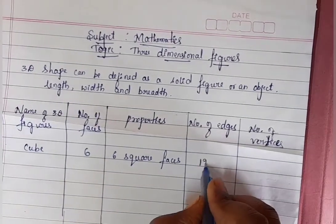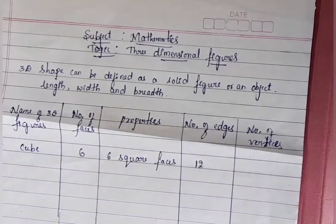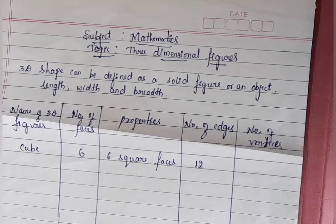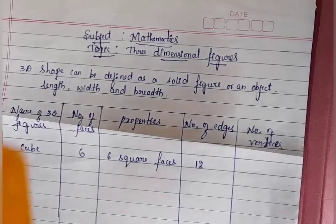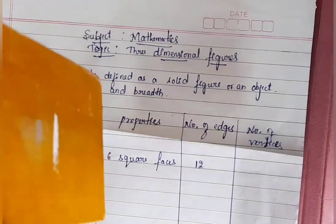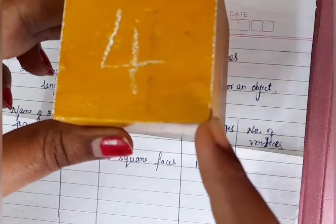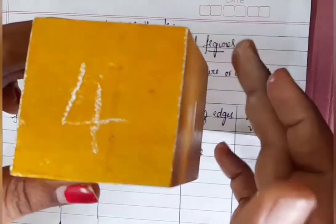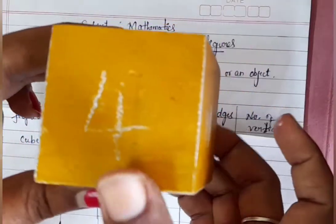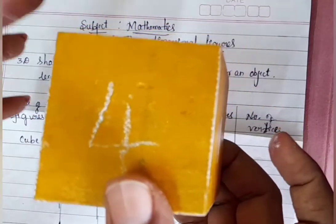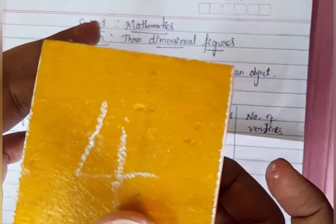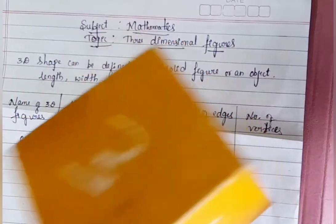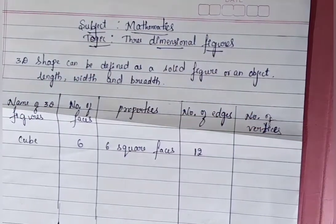Number of edges, number of vertices. Count the vertices: one, two, three, four, five, six, seven, eight. The cube has eight vertices.